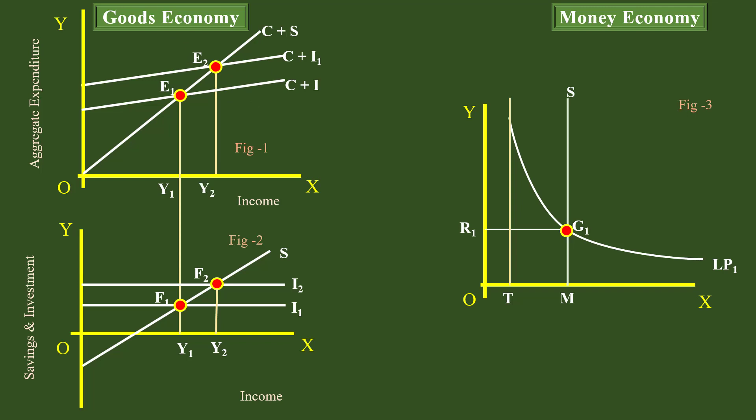Thus, the goods market equilibrium is explained keeping the money economy variables constant. One thing which deserves our attention is that it does not consider the effect of increase in income on interest rate, and the effect of change in interest rate on the level of income. This is a serious flaw — it makes policy making ineffective.